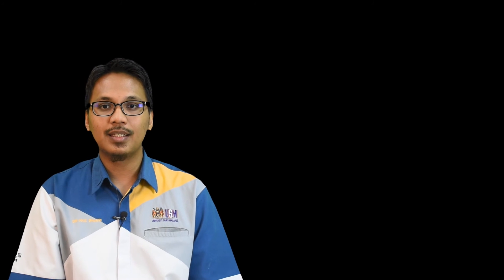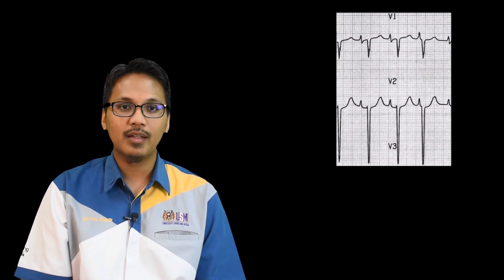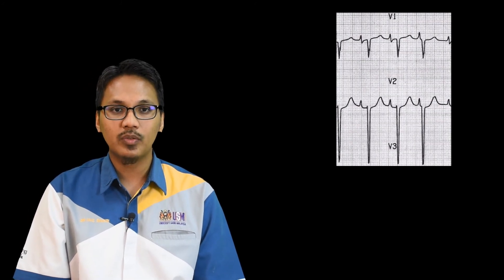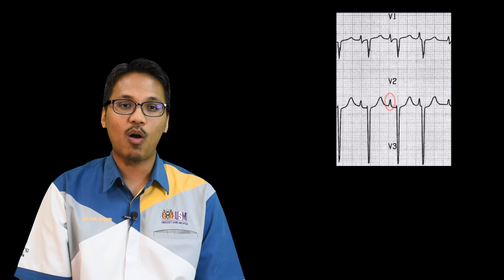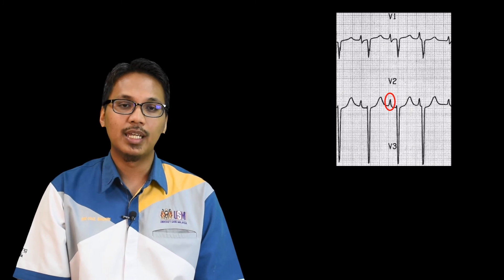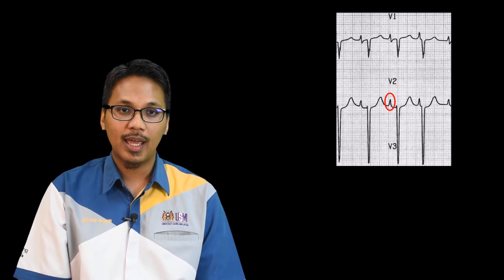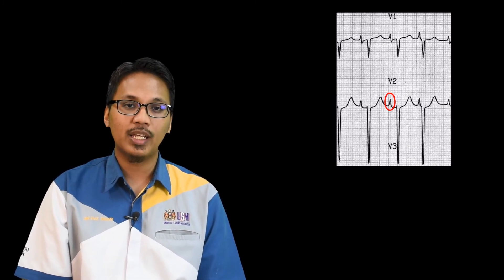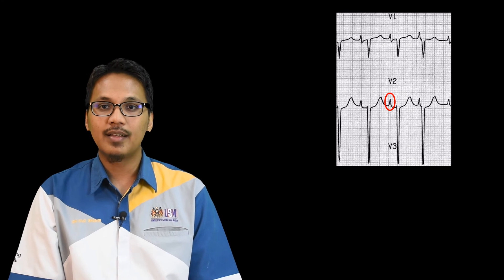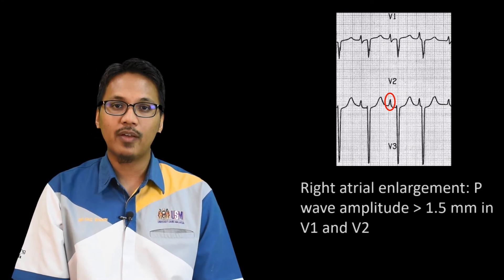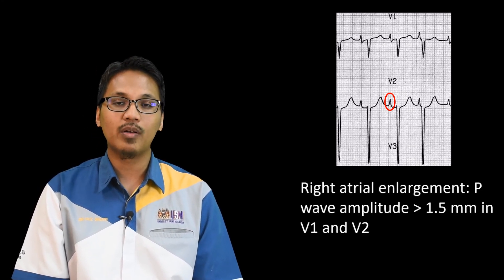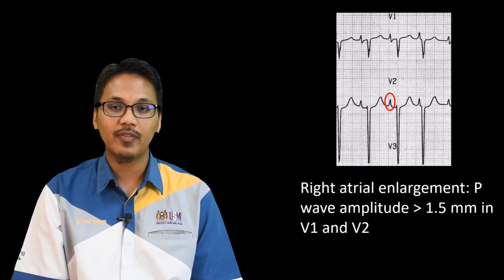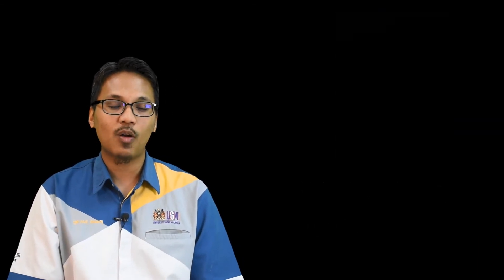This is our second example — you can see from leads V1 and V2, especially particularly obvious in lead V2 as shown in the red circle, there is a P-wave with amplitude of more than 1.5 mm. That concludes our third special condition ECG, which is P-Pulmonale.